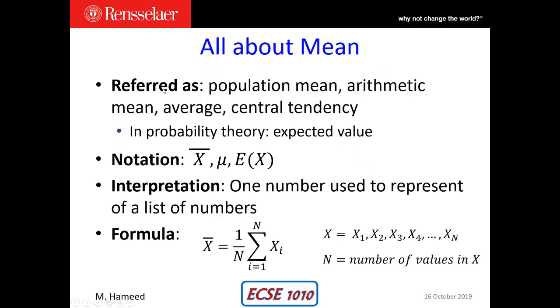The mean is referred to by several names: population mean, arithmetic mean which is probably a better term, or simply the average, which is also called the central tendency of a variable.